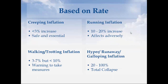Next, let's see the types of inflation based on rate. First is creeping inflation, where the price hike is less than 3%. It is normally safe and essential for an economy's regular growth. If uncurbed, it leads to walking or trotting inflation, where the price hike is between 3 and 7% but less than 10%. It is normally a warning sign for the government to take measures to curb inflation.